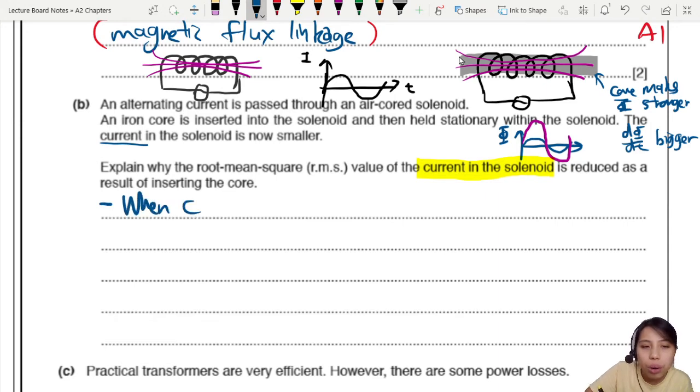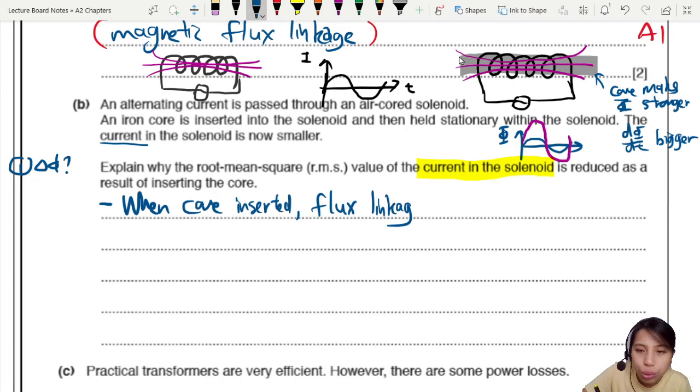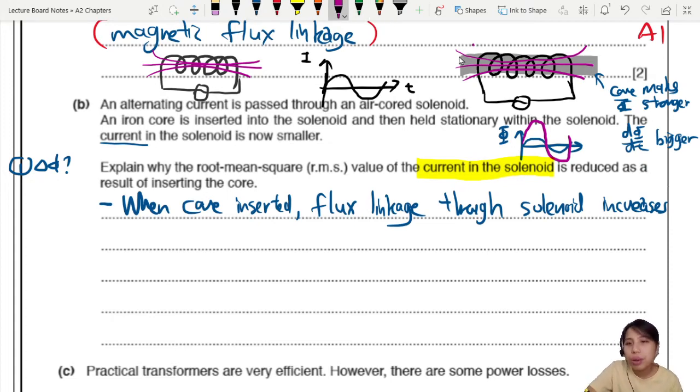So when the core is inserted, first thing, is there a change in flux? When the core is inserted, the flux linkage through the solenoid increases because the iron core makes your B much stronger when you put it in. So now you have, for the same amount of current, you have a very large B that is changing and oscillating. That's number one.